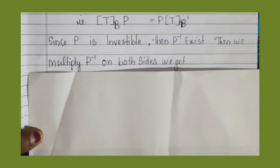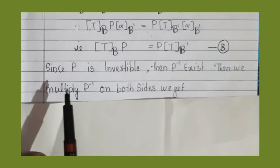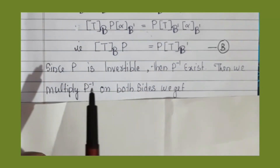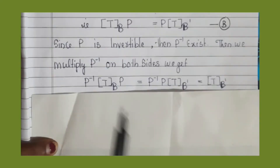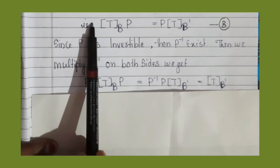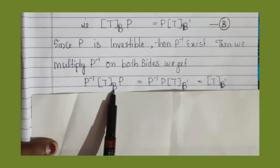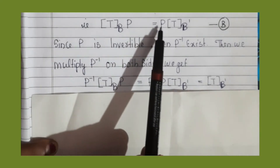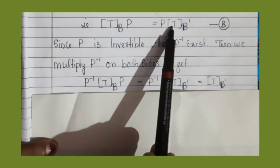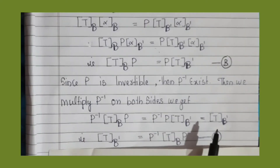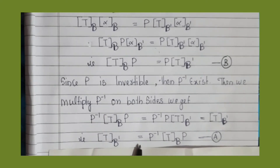Since P is invertible, then P inverse exists. We multiply P inverse on both sides of the equation. Therefore, we get P inverse times the matrix of T related to B times P, equal to P inverse times P times the matrix of T related to B'. This gives us the matrix of T related to B' is equal to P inverse times the matrix of T related to B times P. Putting this as equation number A.